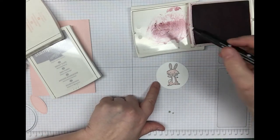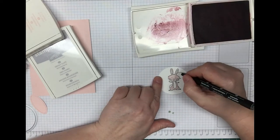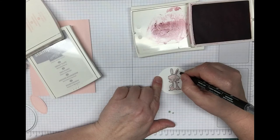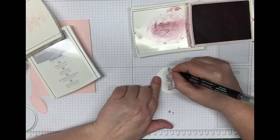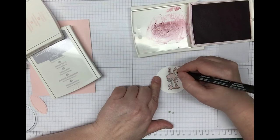Then I'm going to pick up the sweet sugarplum and color his ears with this. I'm just going to pick some of this up and color where I want to add this color. I'm just going to color in his ears with the sweet sugarplum.